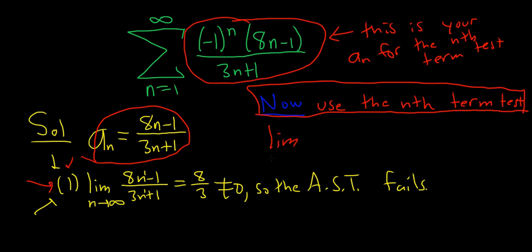So you take the limit of a sub n, which is the whole thing. So negative 1 to the n, 8n minus 1 over 3n plus 1. And we know that this limit here without the negative 1 to the n is 8 thirds. But this is bouncing back and forth, so this limit is DNE. In particular, it's not equal to 0. So it diverges by the nth term test.